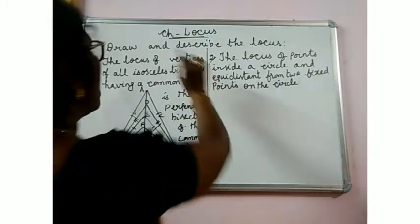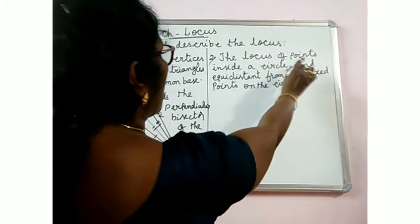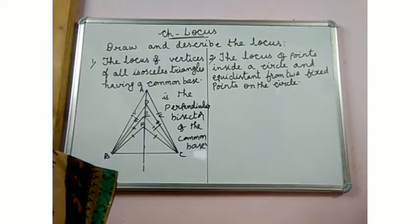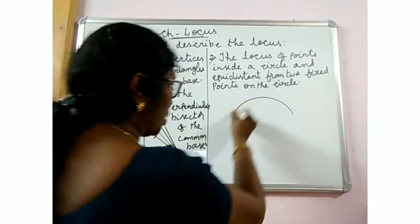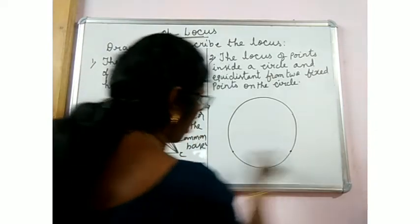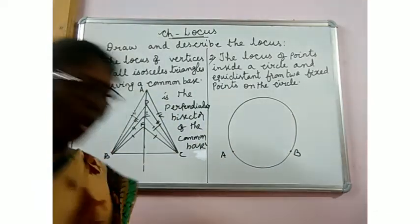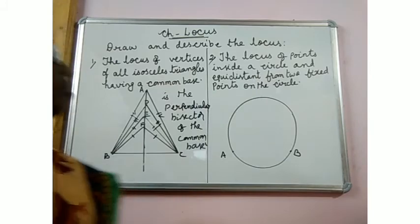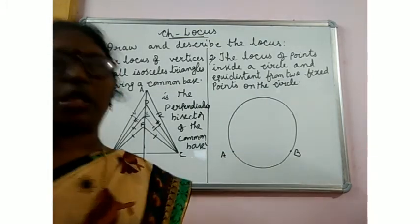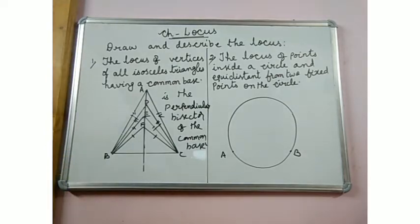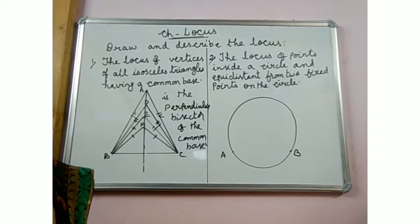Now the second situation: draw and describe the locus of points inside a circle at equal distance from two fixed points on the circle. Suppose this is a circle, and these are the two fixed points A and B. Already you have learned that the locus of points equidistant from two fixed points is the perpendicular bisector of the line segment joining the two points.